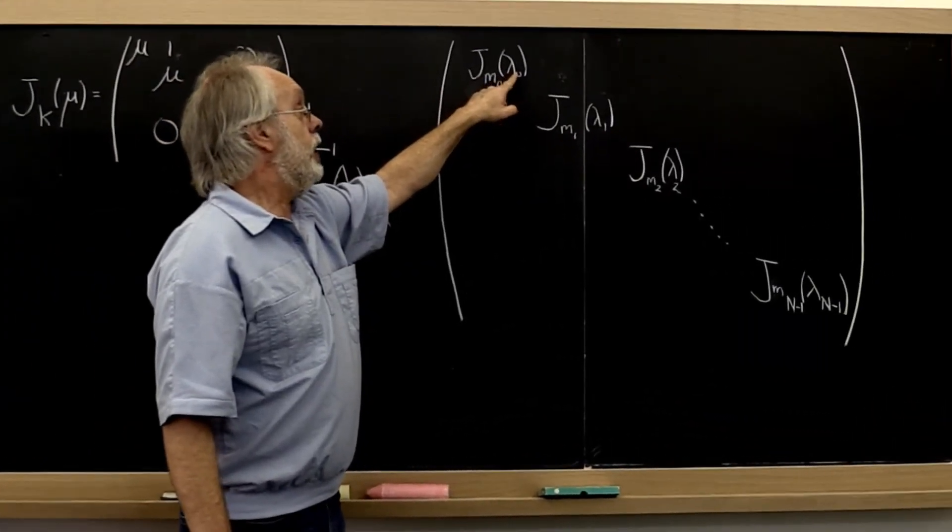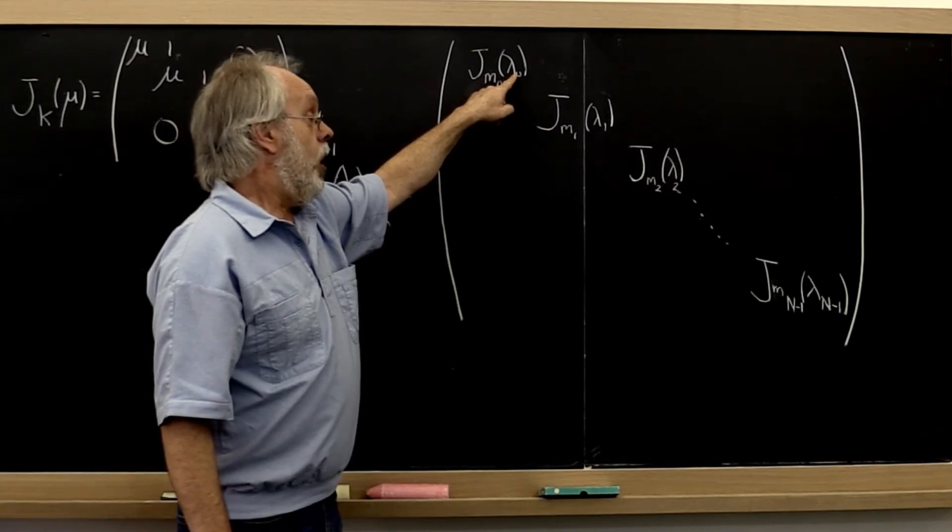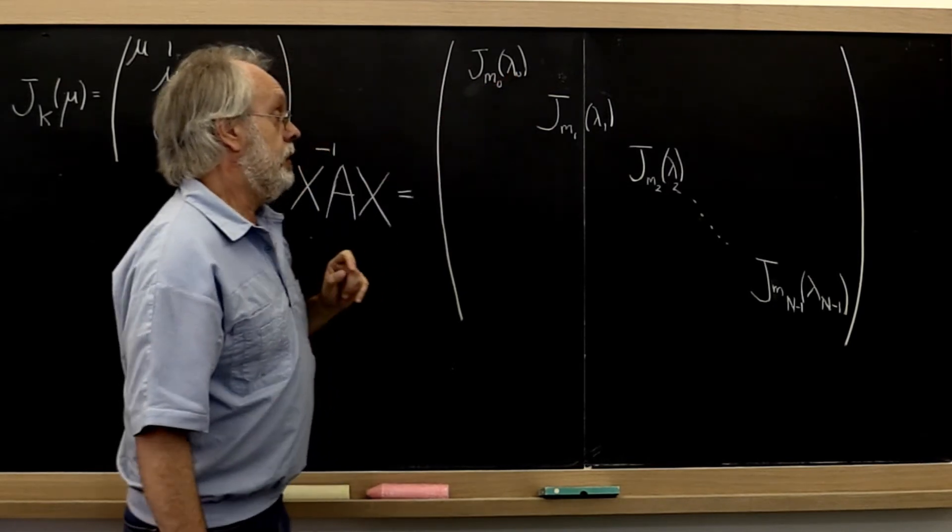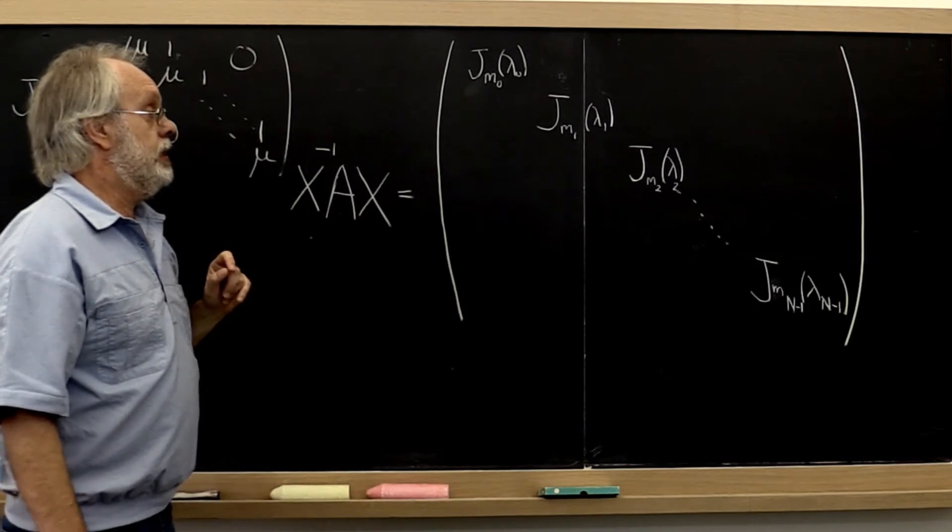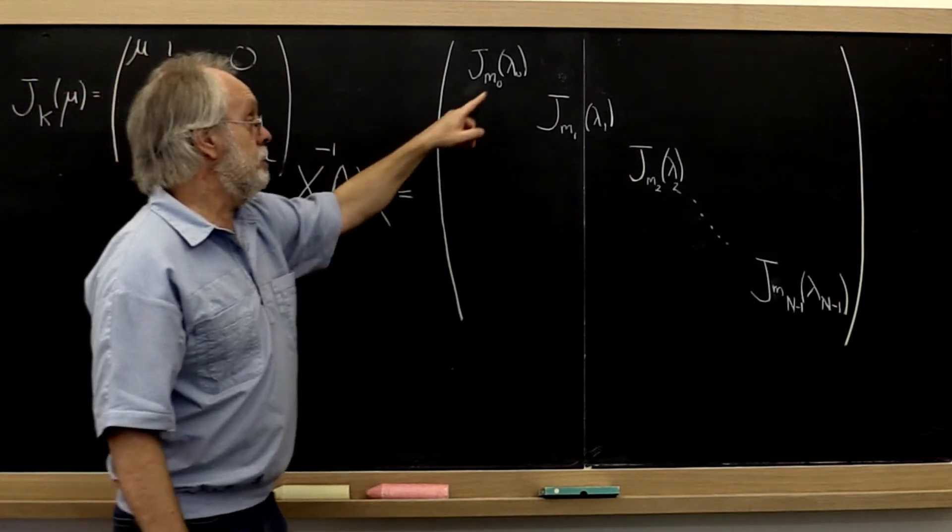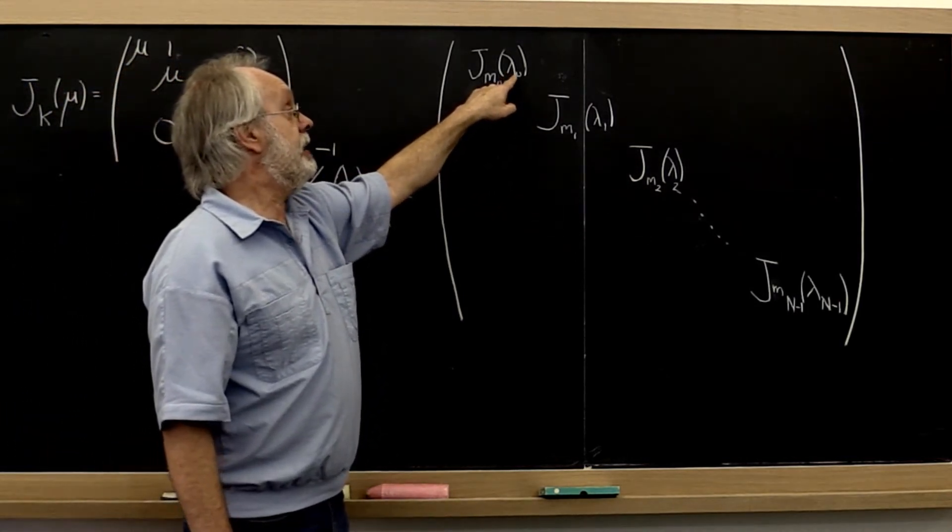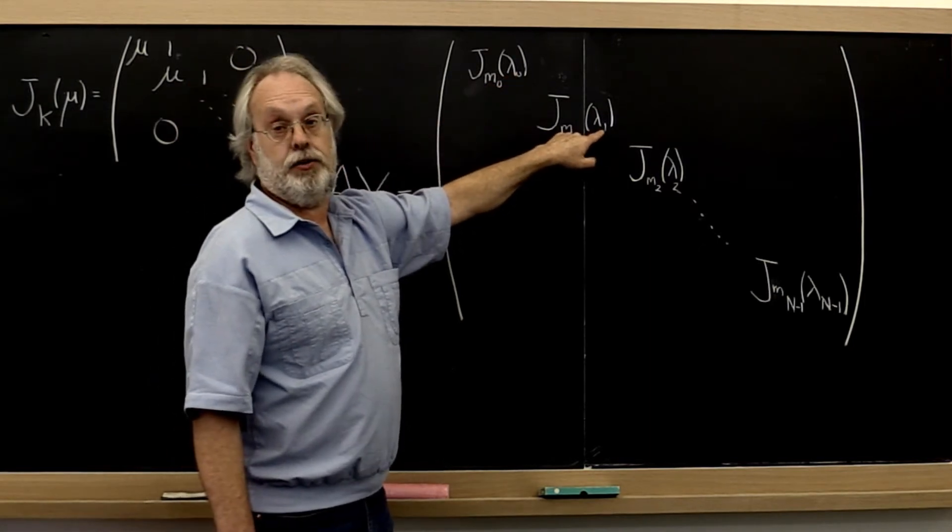The diagonal of each Jordan block then are eigenvalues of this matrix. It's entirely possible that this eigenvalue is equal to that eigenvalue.